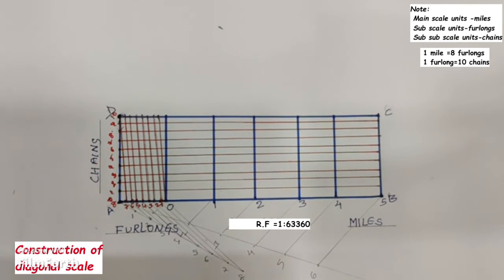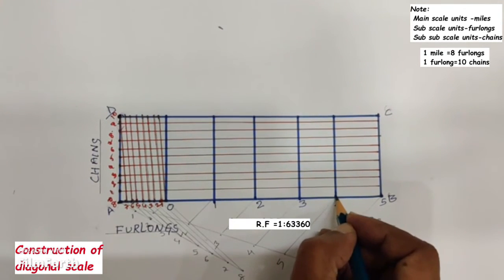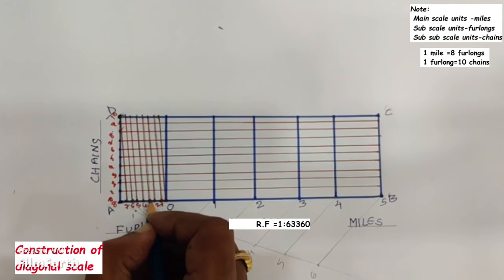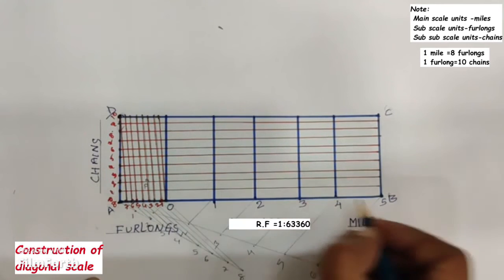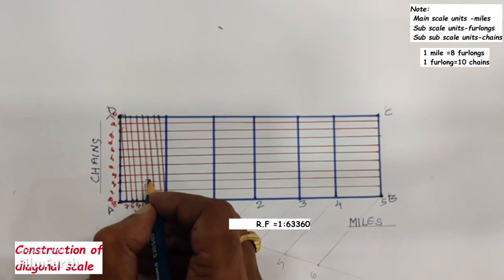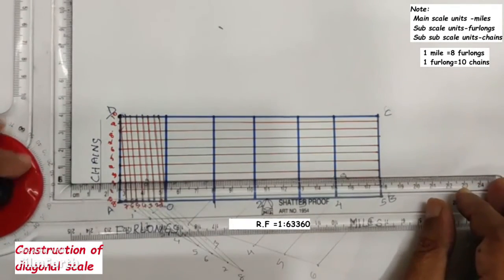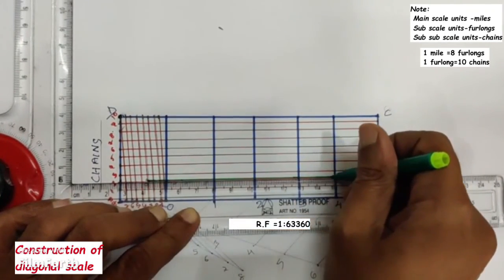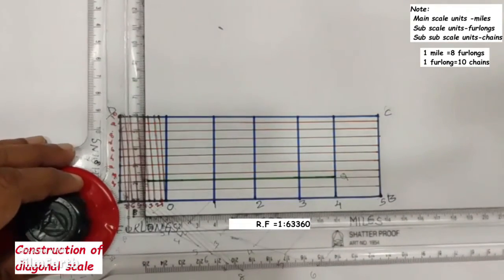Now we will show the measurement of 4 miles, 3 furlongs, and 2 chains on the scale. From 0 in the rightward direction, take 4 miles. From 0 in the leftward direction, take 3 furlongs. Along this diagonal line, move up to the second division and name this point P. Parallel to AB, passing through P, draw a horizontal line up to the corresponding point. This line PQ represents the distance of 4 miles, 3 furlongs, and 2 chains.